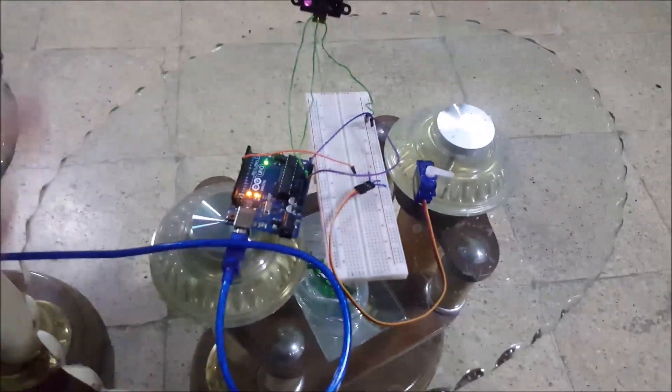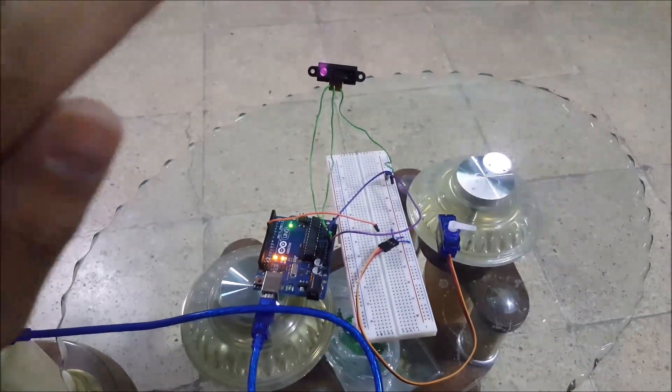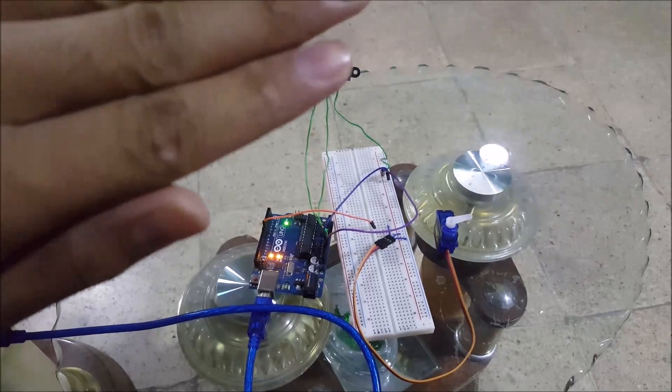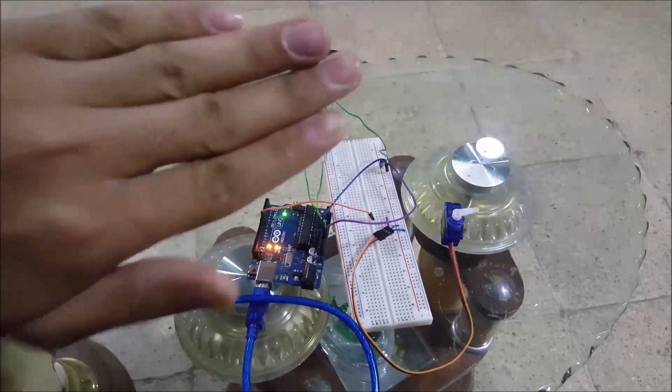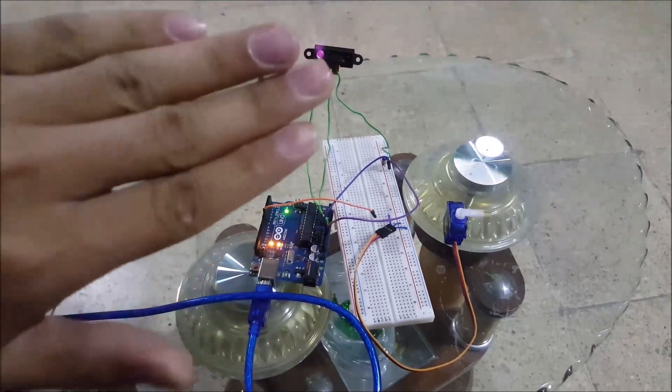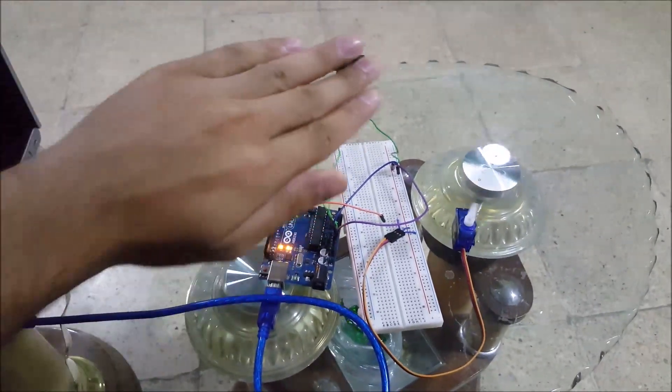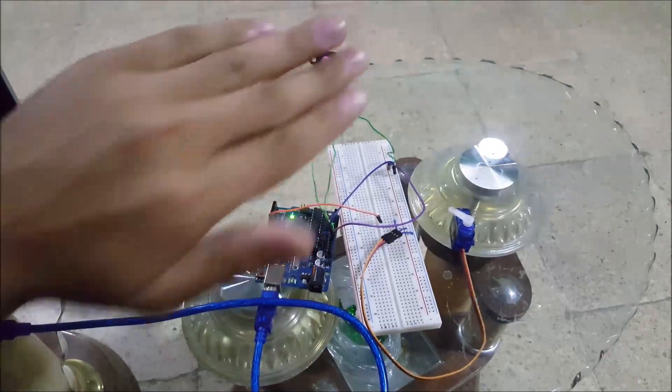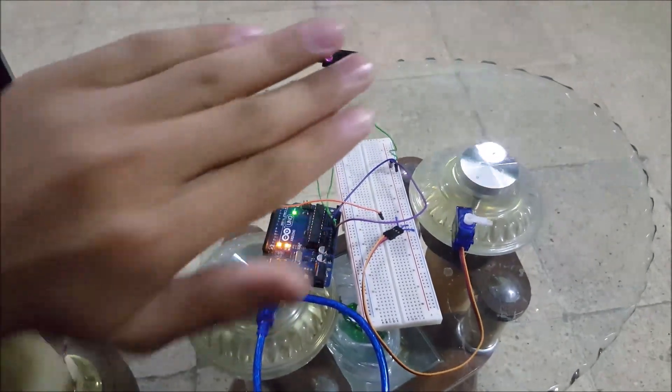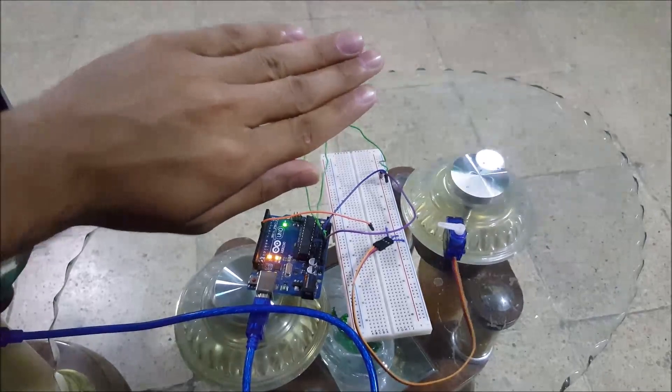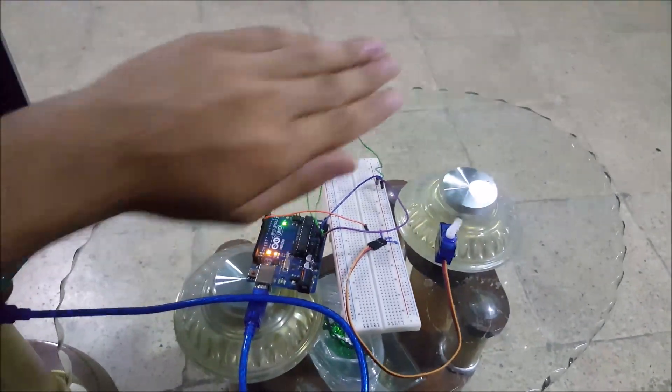As my hand approaches the infrared sensor, notice the movement of the servo motor. It's almost as if it proportionally changes with the movement of my hand. As my hand gets closer, the servo motor proportionally changes from zero to 180 degrees.